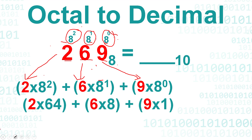The next step is we will solve each power. The answer of 8 raised to the power of two is equal to 64. Then 8 raised to the power of one is equal to 8, and 8 raised to the power of zero is equal to 1.